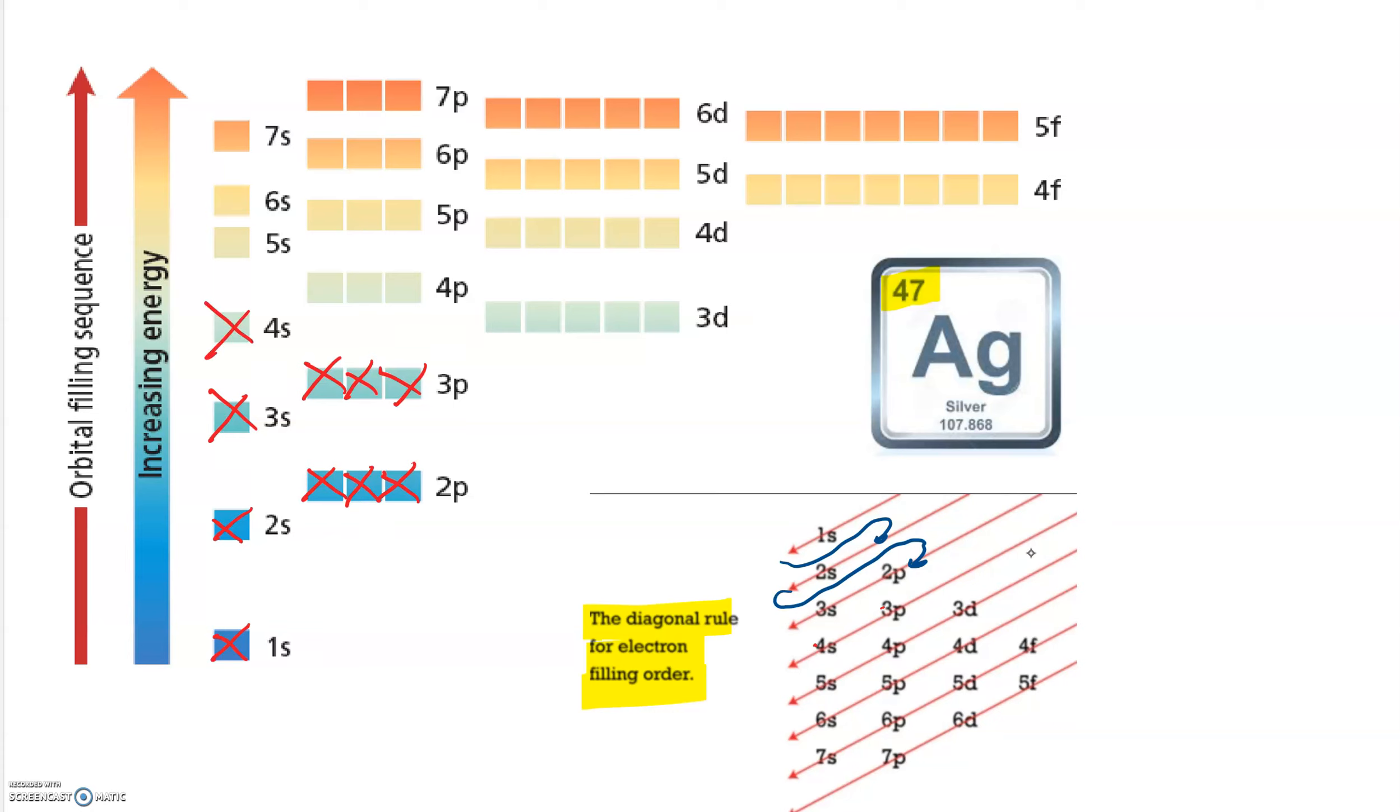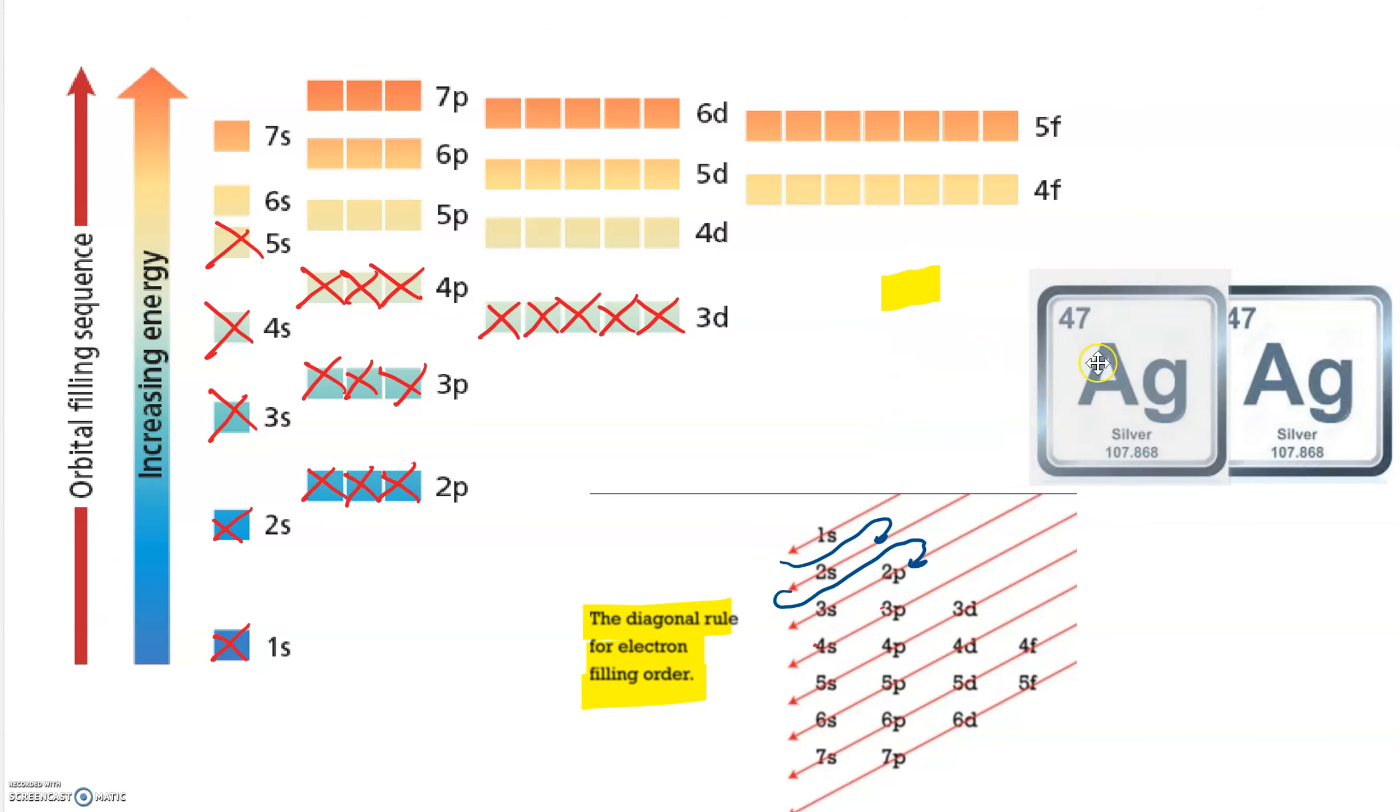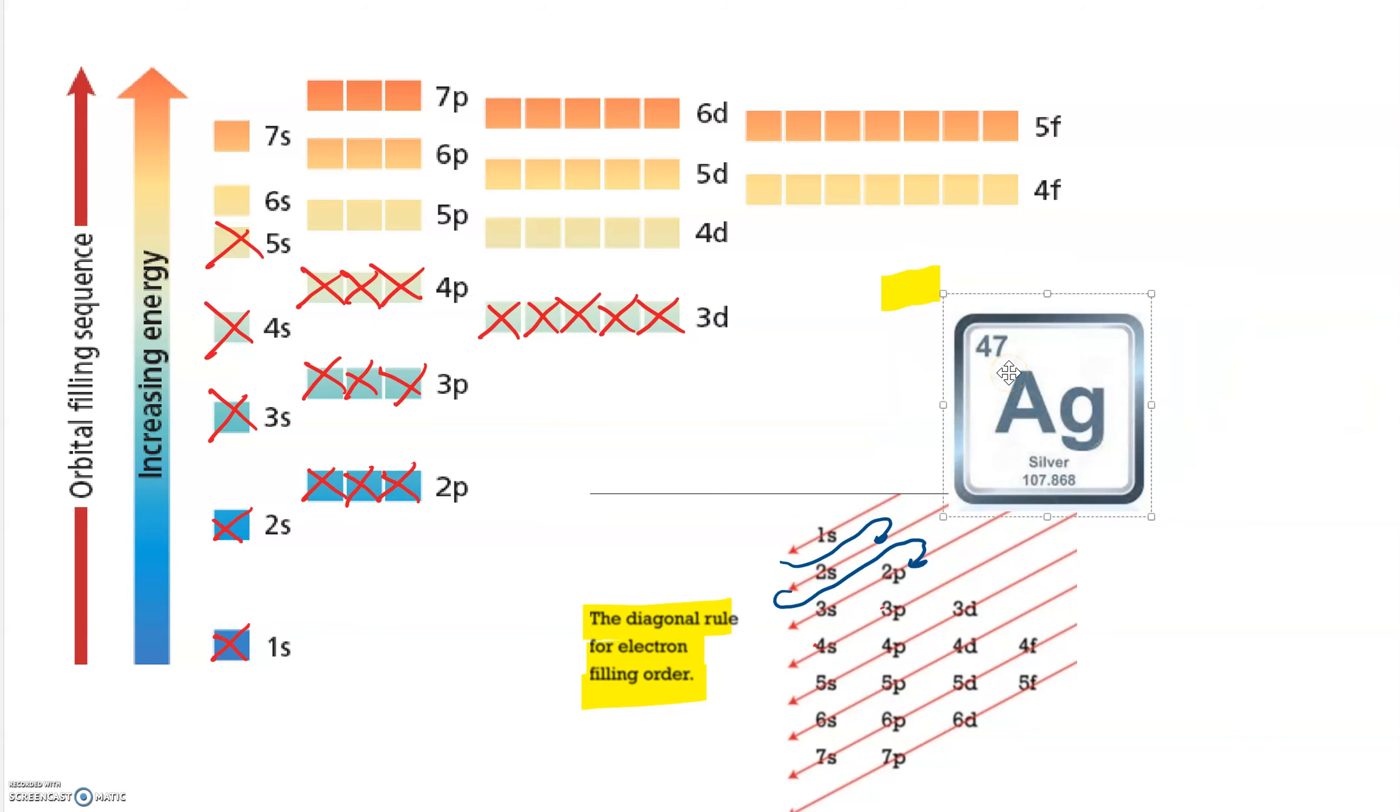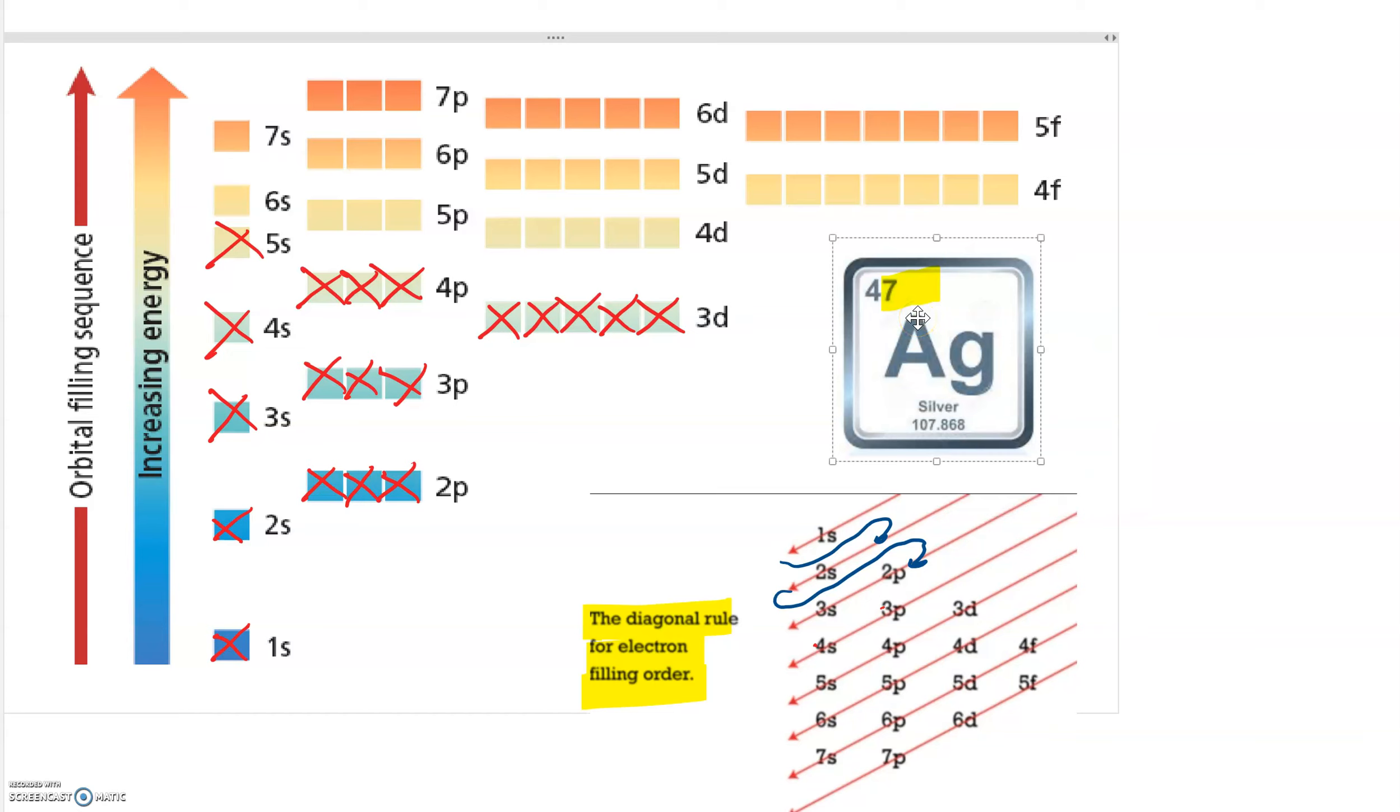From 4s we go to 3d, 21, 22, 23, 24, 25, 26, 27, 28, 29, 30. From 3d to 4p, 31, 32, 33, 34, 35, 36. From 4p to 5s, 37, 38. And from 5s to 4d. And that's going to be right here. 39, 40, 41, 42, 43, 44, 45, 46, 47.